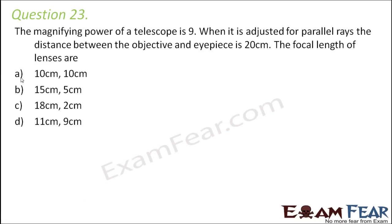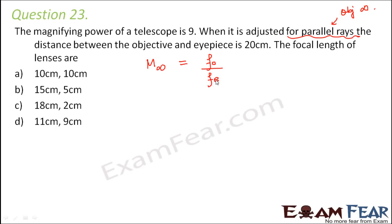Question number 23. The magnifying power of a telescope is 9. When adjusted for parallel rays — meaning the object is at infinity — the distance between the objective and eyepiece is 20 centimeters. The magnifying power equals the ratio of the focal length of the objective to the focal length of the eyepiece. The tube length equals the sum of those two focal lengths. Using these two relations we can solve this question.